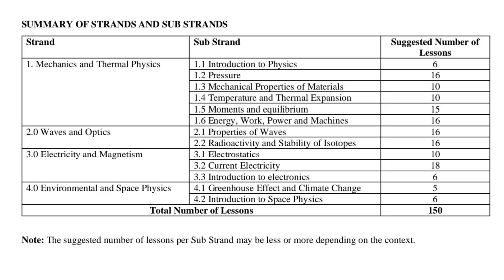The total number of lessons allocated to physics in grade 10 will be 150 lessons. That covers the strands and substrands learners will study in physics as one of their selected combinations. Let's move to the next learning area.